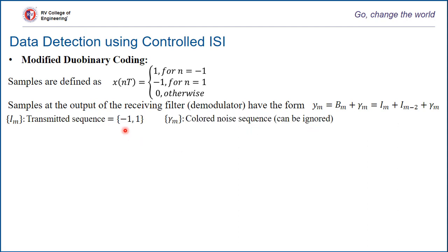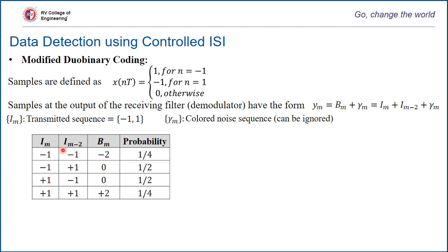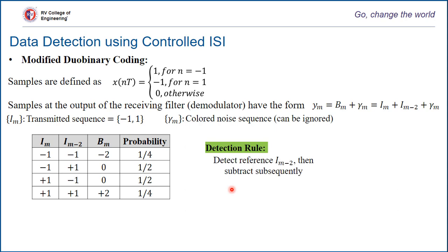The transmitted sequence is plus and minus 1 for the two PAM case, which can be extended to any other level of modulation scheme. Unlike im and im minus 1, it is a combination of im and im minus 2, similar to simple duobinary coding. The addition of these two will generate either plus 2, minus 2, or 0 with equal probability. Individual symbols at transmission will have probabilities of 1/4 each for plus and minus 2, and one half for binary 0.